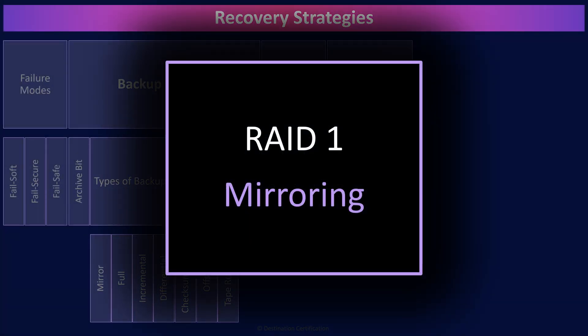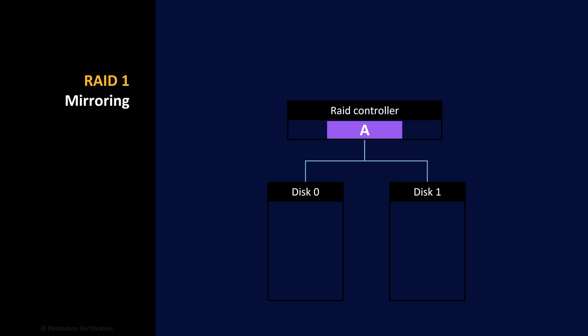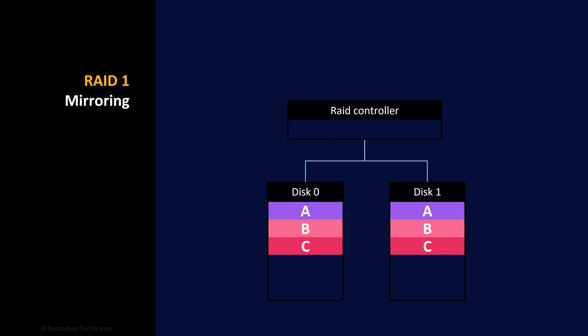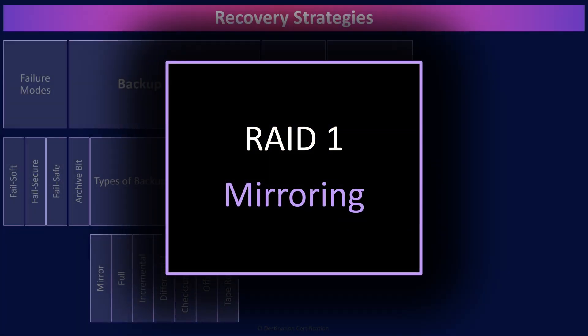RAID 1, also known as mirroring, uses two or more hard drives. When a file is sent to the RAID controller, the file is copied — the first entire copy is written to the first hard drive and the second entire copy to the second hard drive. RAID 1 is therefore all about redundancy, because if we lose a hard drive, we still have a complete copy of the file on the other drive. RAID 10, or RAID 1 plus 0, is RAID 1 and RAID 0 together, and therefore requires a minimum of four hard drives. A file is mirrored and then striped, creating four separate fragments of data written to four different hard drives, giving you both speed and redundancy.